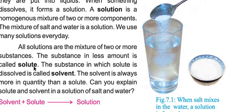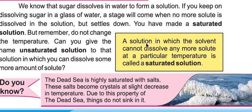The substance in which the solute is dissolved is called the solvent. The component of a solution which is in lesser amount is called the solute, and the component which is in large amount is called the solvent. A saturated solution is one in which the solvent cannot dissolve any more solute.